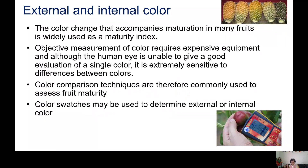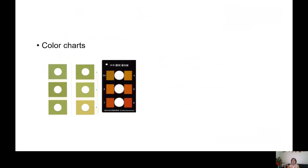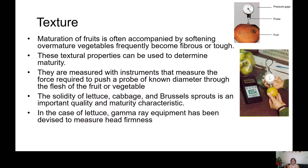Color comparison techniques are very important and there are a lot of tools that can be used. There are color charts which are inexpensive and you can carry them along to match the color of fruits — for example, apples at a certain stage, bananas at a certain stage, or tomatoes — so color charts can be used to compare maturity.